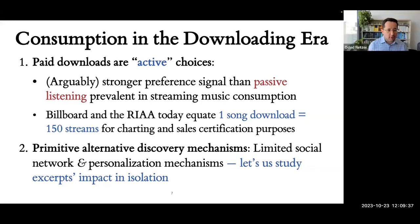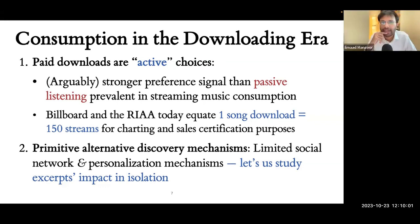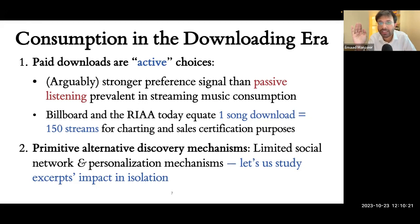A panelist asks where artists make more money — downloading or streaming. During the time period analyzed, it was pre-Spotify in the US. There were other streaming platforms like Rhapsody but they weren't very popular. Today, per stream you get paid something like one thousandth of a cent — not much compared to a per-download payment in the downloading era. During that time period, artists were mainly earning from physical sales and digital sales.